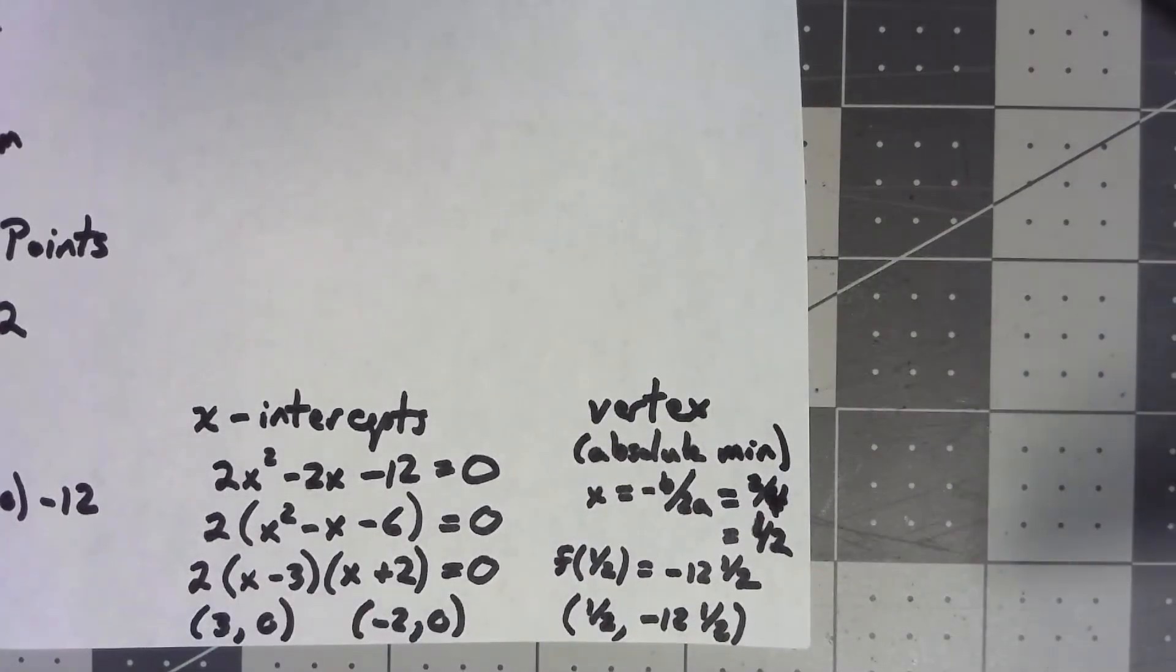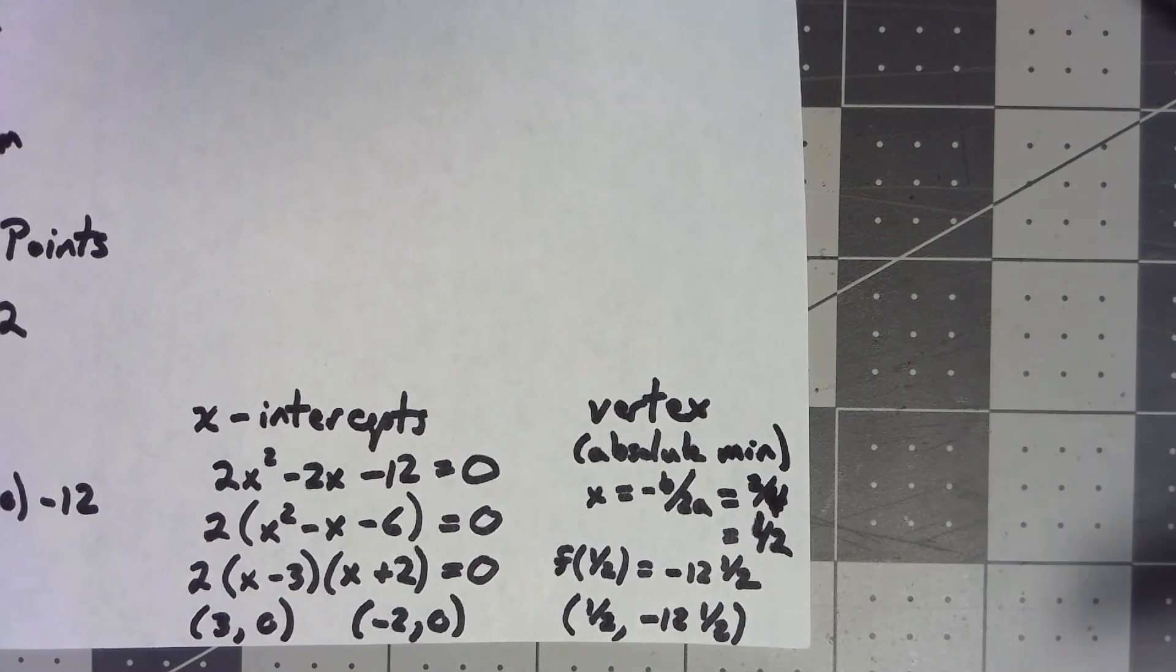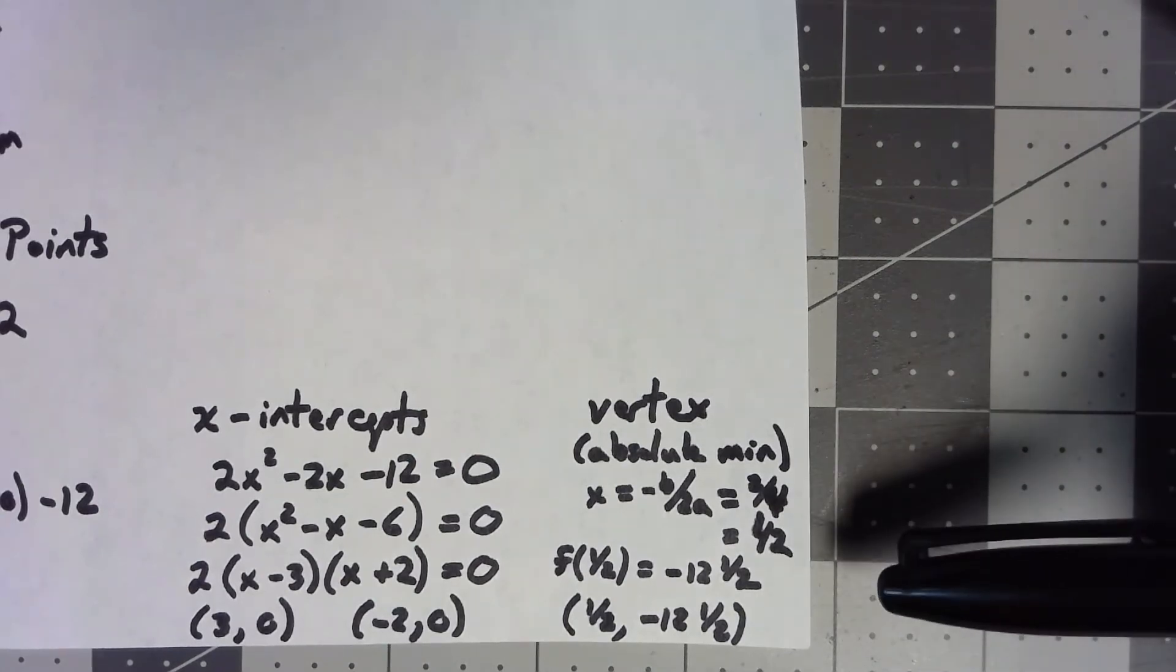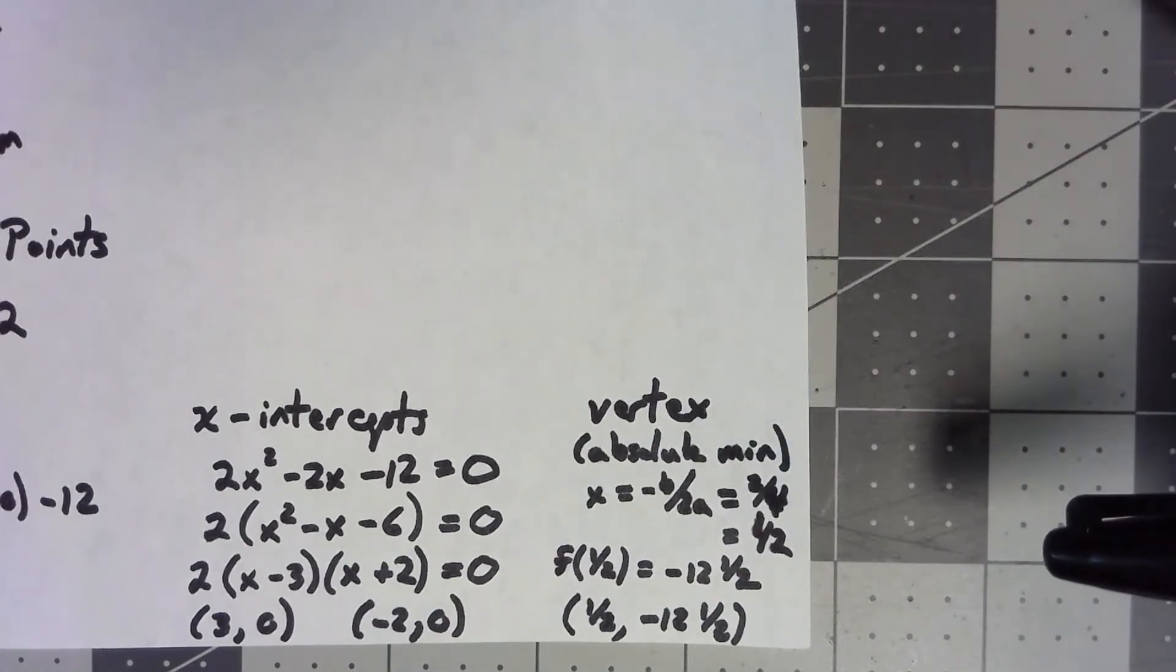So, two over four reduces to one half. Then, to find the y-value, all I need to do is plug in one half. I kind of squeezed it onto a page, so I didn't work that all out. But, you can certainly go ahead and check that. You will get negative twelve and a half, or negative twenty-five halves.